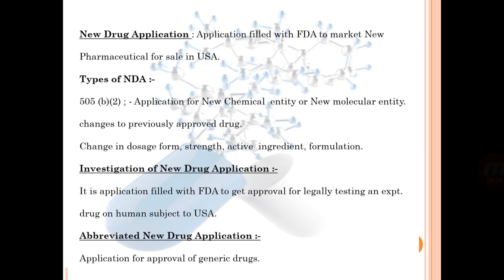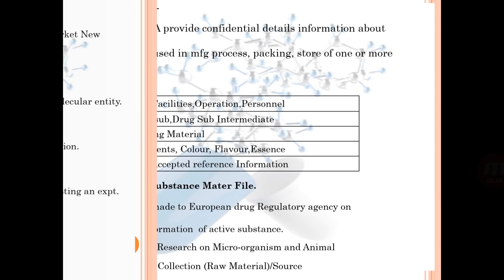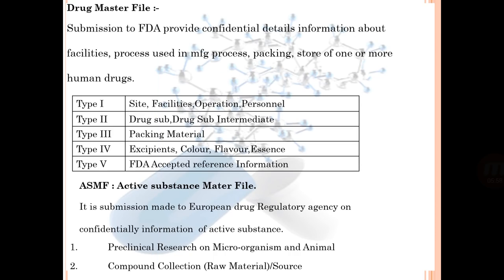Regarding drug applications: the New Drug Application (NDA) is filed with the FDA to market new pharmaceuticals for sale in the USA. Types include Investigation of New Drug Application (IND) and Abbreviated New Drug Application (ANDA). The Drug Master File (DMF) is a submission to the FDA providing confidential detailed information about the facilities, process, and use in manufacturing, packing, and storage of human drugs. DMF types are Type 1 through Type 5.